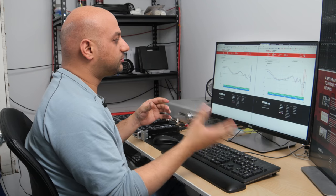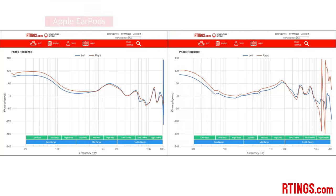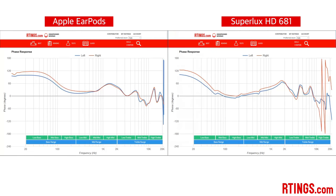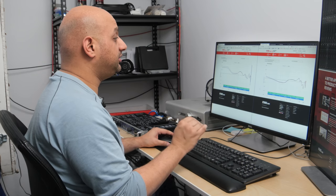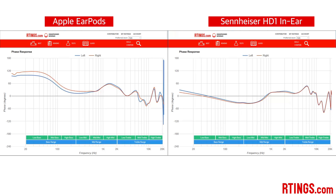The next headphone is the Superlux HD681. There is a constant mismatch between the left and right drivers here, but looking at our phase mismatch audibility threshold, this is not going to be really audible, mostly except for the high treble range — so this is a pretty good phase mismatch response. The next headphone is the Sennheiser Momentum in-ear, also rebranded as the HD1 in-ear, which has nearly perfect phase matching between left and right drivers, meaning it will have a really good stereo image.